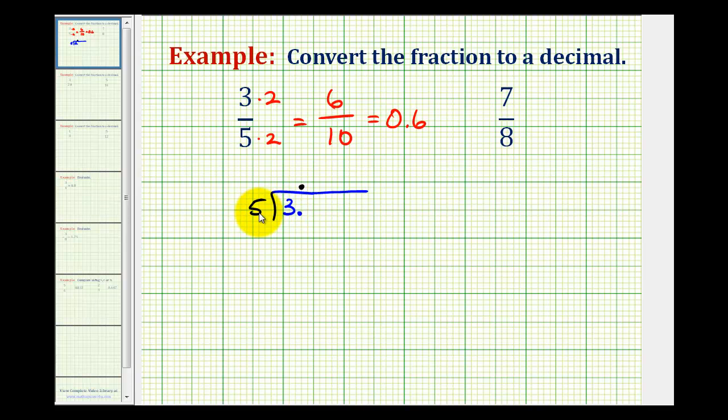Notice how there aren't any fives in 3, because 3 is too small, but if we add a 0, we can think of this as 30, and then if we ask how many fives are in 30, that would be 6. 6 times 5 is 30. And when we subtract, this difference is 0, which means this decimal terminates, and you can see that 0.6 here is the same decimal we had when we used a fraction with the power of 10.